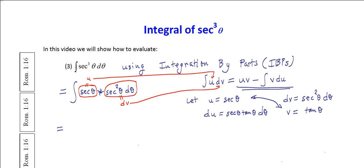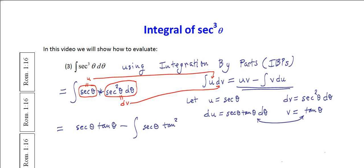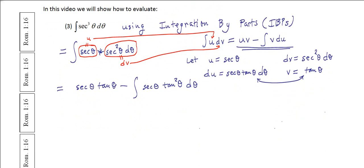Applying the integration by parts formula, this may be written as u times v — the product of those two terms — which is secant theta times tan theta, minus the integral of v times du. That gives us secant theta times tan theta, minus the integral of secant theta times tan squared theta d theta.